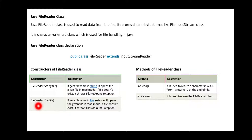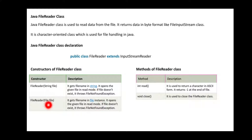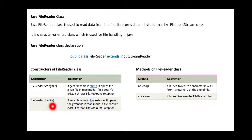The second constructor is FileReader(File file) — it takes a File object as an instance. It also opens in read mode. The difference is: in the first constructor the file name is a string value, and in the second constructor it is a File object.